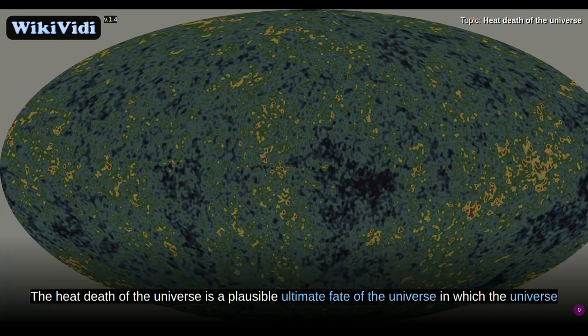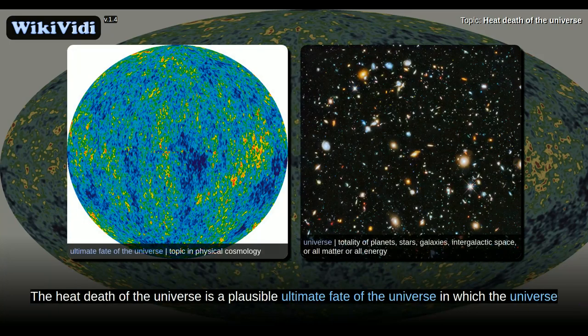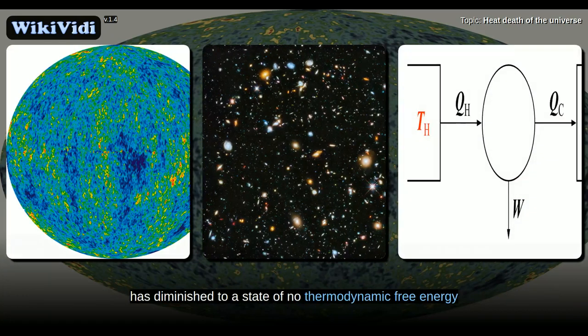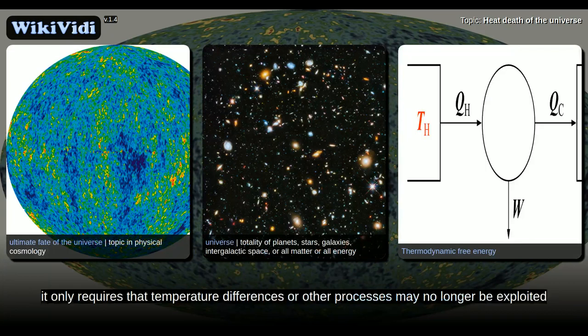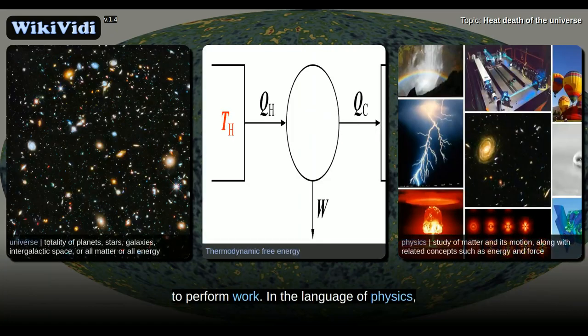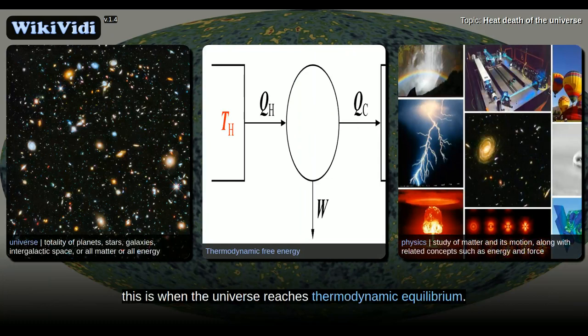Heat death of the universe. The heat death of the universe is a plausible ultimate fate of the universe in which the universe has diminished to a state of no thermodynamic free energy and therefore can no longer sustain processes that increase entropy. Heat death does not imply any particular absolute temperature. It only requires that temperature differences or other processes may no longer be exploited to perform work. This is when the universe reaches thermodynamic equilibrium.